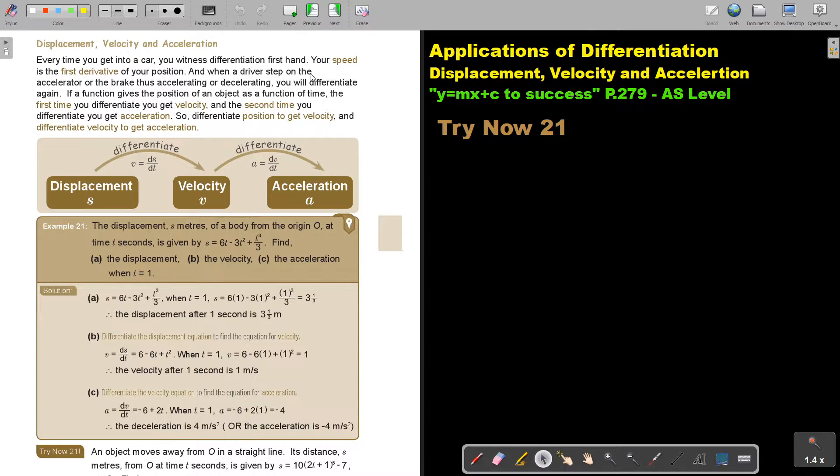So differentiate position to get velocity and differentiate velocity to get acceleration. This is a nice summary of this topic. So you start with displacement. As soon as you differentiate it, ds by dt, then you get velocity. And as soon as you differentiate this again, dv by dt, you get acceleration. Let's look at an example.